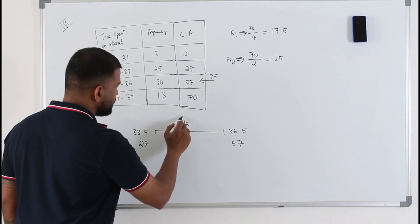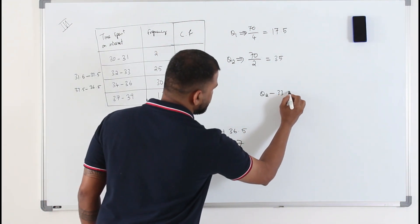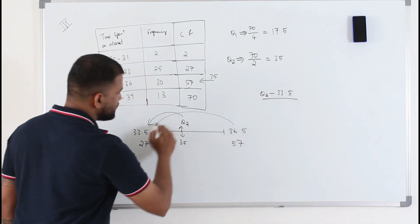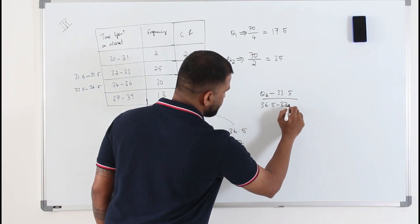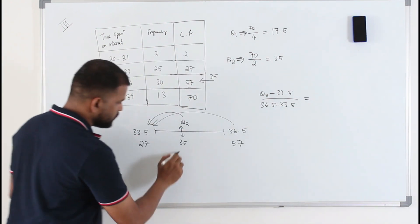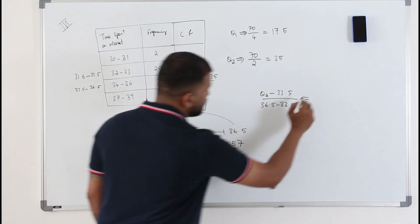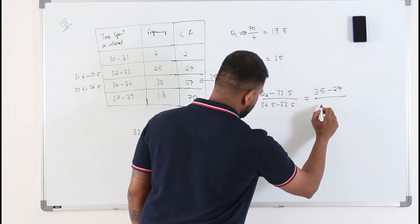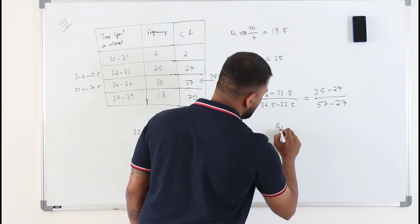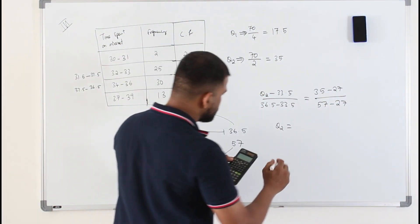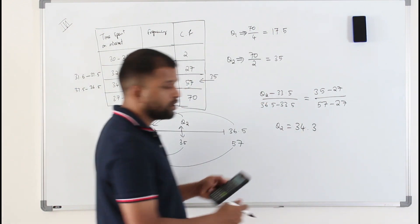So apply linear interpolation. Q2 minus this... Q2 is going to be 34.3.